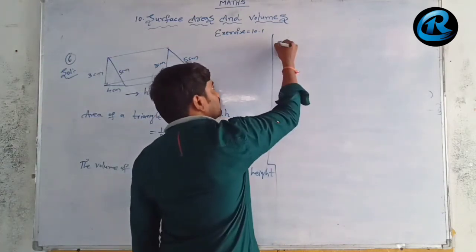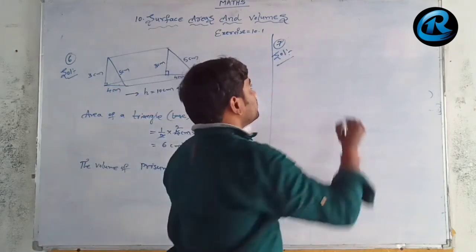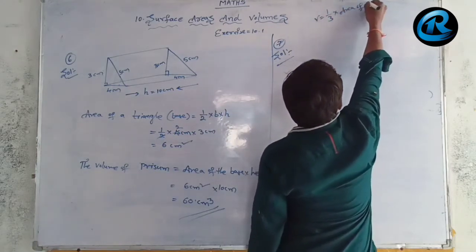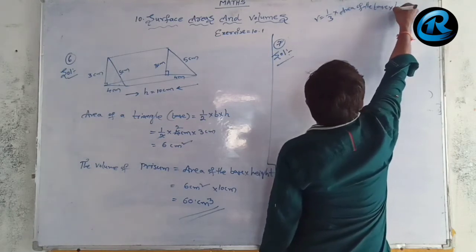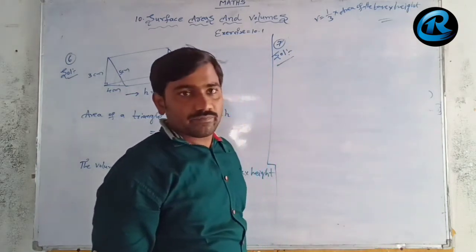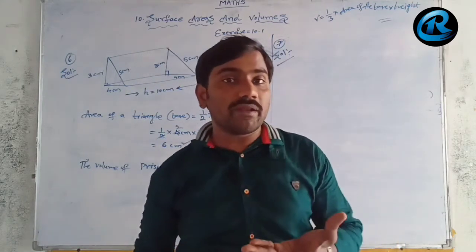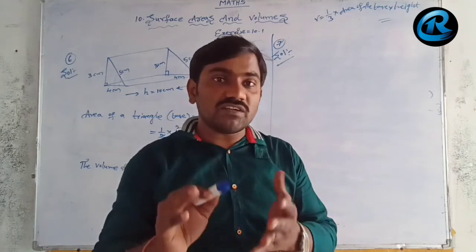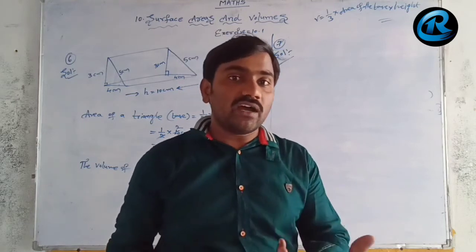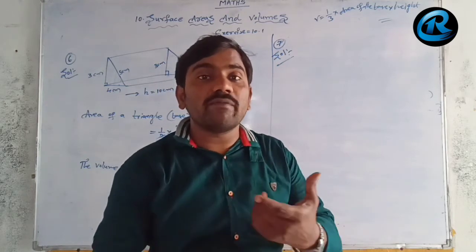The 7th question is based on a pyramid. The volume of a pyramid = ⅓ × area of base × height. Pyramids are named based on their base shape: triangular pyramid, square pyramid, rectangular pyramid, pentagonal, hexagonal, octagonal, or decagonal pyramid.